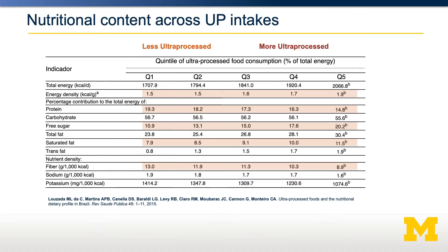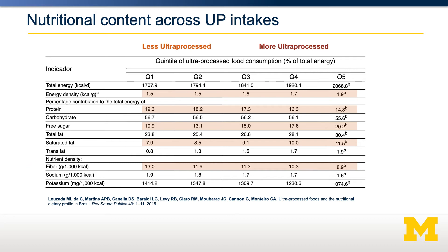Let's look at what an ultra-processed food diet might look like compared to an unprocessed diet. Here is a study done in Brazil where they categorized people into five different quintiles depending on how much of their calories they get from ultra-processed food. Quintile one gets the least calories from ultra-processed foods, whereas quintile five gets the most. Diets with more energy from ultra-processed foods tended to have more total energy, that energy tended to be more dense — more calories per gram — and they tended to have higher sugar but less protein and less fiber. These are key characteristics of ultra-processed foods: high in sugar and salt, but low in fiber and protein.